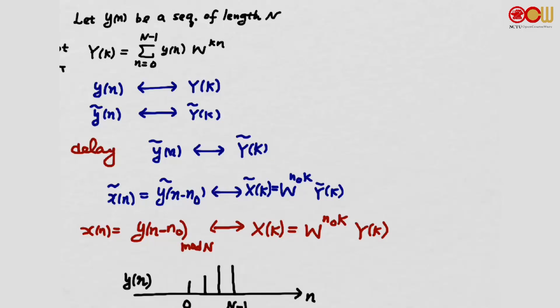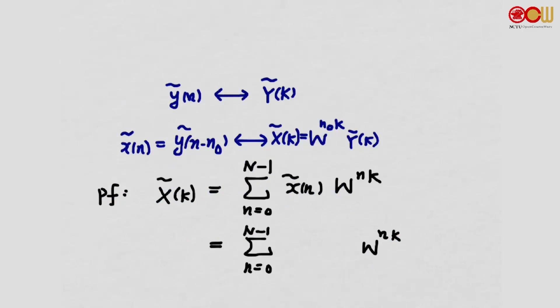That's the relation in terms of DFT. You can see why we didn't state the property in terms of DFT first — it's more straightforward to state it using DFS coefficients. Now for the proof: the proof is quite straightforward. We plug in the expression for X-tilde[K] in terms of X-tilde[n], then substitute X-tilde[n] = Y-tilde[n − N0].